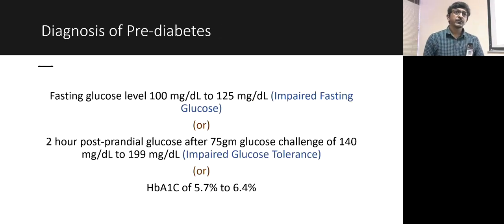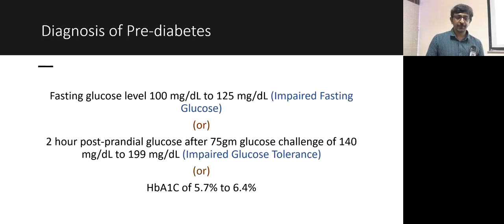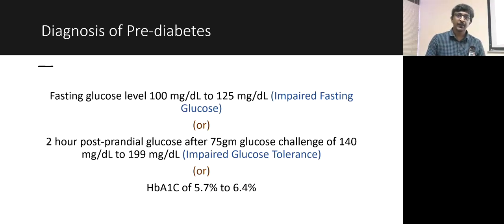Pre-diabetes is defined by impaired fasting glucose — glucose levels between 100 to 125 — or impaired glucose tolerance — glucose levels between 140 to 199 — or an HbA1c of 5.7 to 6.4%.